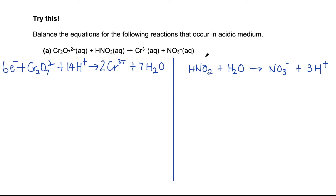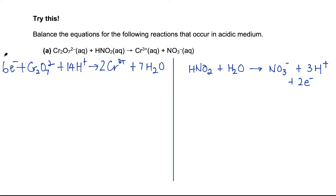For the oxidation half equation, the overall charge on the left is 0, and on the right it is minus 1 plus 3, which is plus 2. The right side has a positive charge while the left has none, so I add 2 electrons on the right. Now we make the number of electrons the same: there are 6 electrons in the reduction and 2 in the oxidation, so the common multiple is 6. I multiply the oxidation equation by 3, giving 3, 3, 3, 3, 9, and 6.